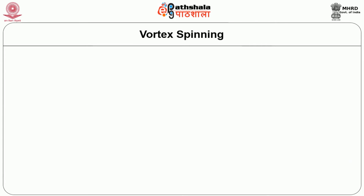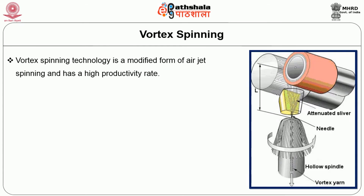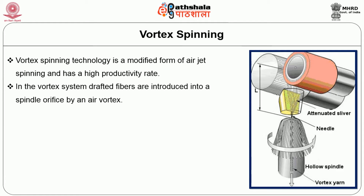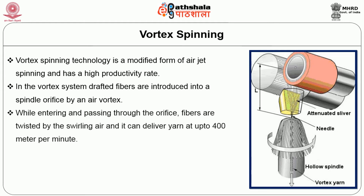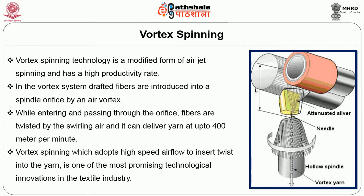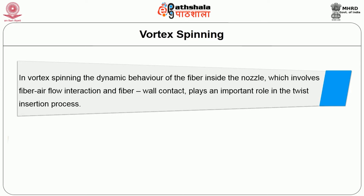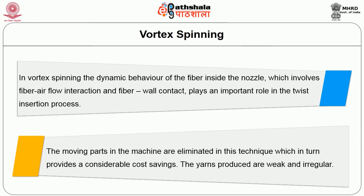Vortex spinning technology is a modification of airjet spinning and has a high productivity rate. In the vortex system, drafted fibers are introduced into a spindle orifice by an air vortex. While entering and passing through the orifice, fibers are twisted by swirling around and it can deliver yarn up to 400 meters per minute. Vortex spinning, which adopts high-speed airflow to insert twist into the yarn, is one of the most promising technological innovations in the textile industry. The dynamic behavior of the fiber inside the nozzle — involving fiber-airflow interaction and fiber-wall contact — plays an important role in the twist insertion process. The moving parts in the machine are eliminated in this technique, which provides considerable cost saving. However, the yarn produced is weak and irregular.